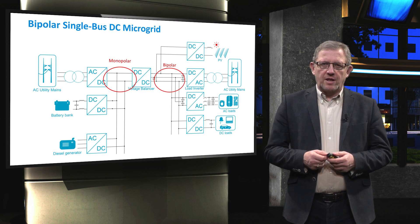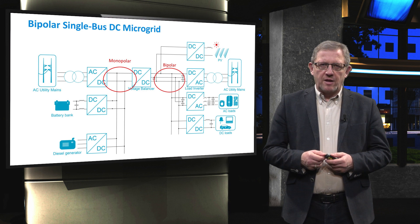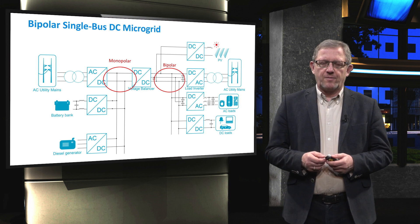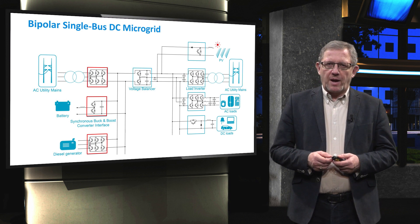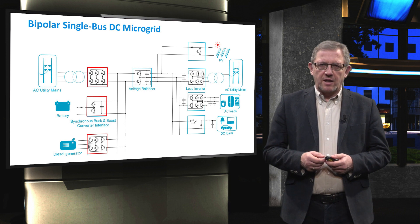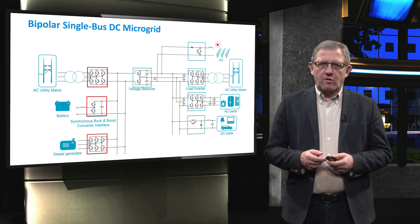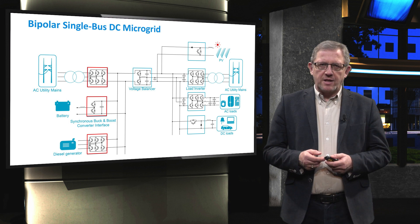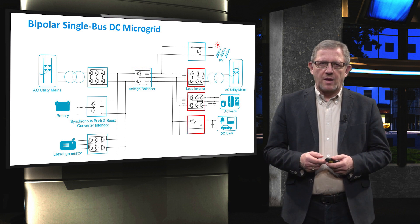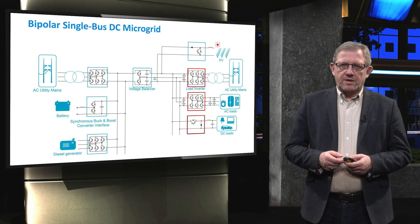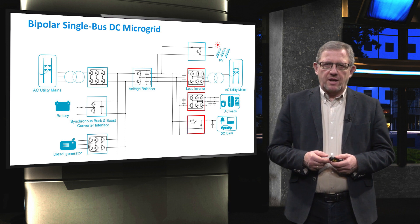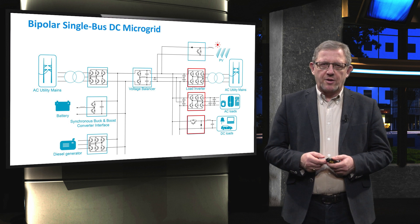In the monopolar DC link on the left, the main grid is connected through a three-phase, three-leg voltage source inverter or AC-to-DC converter. The battery bank is connected to the monopolar DC link with a back-and-boost DC-DC converter. Also, the diesel or gas generator is connected to the DC link via a three-phase AC-DC inverter. On the other hand side, the bipolar DC link is also connected to an external electrical network through an AC-DC voltage source inverter.